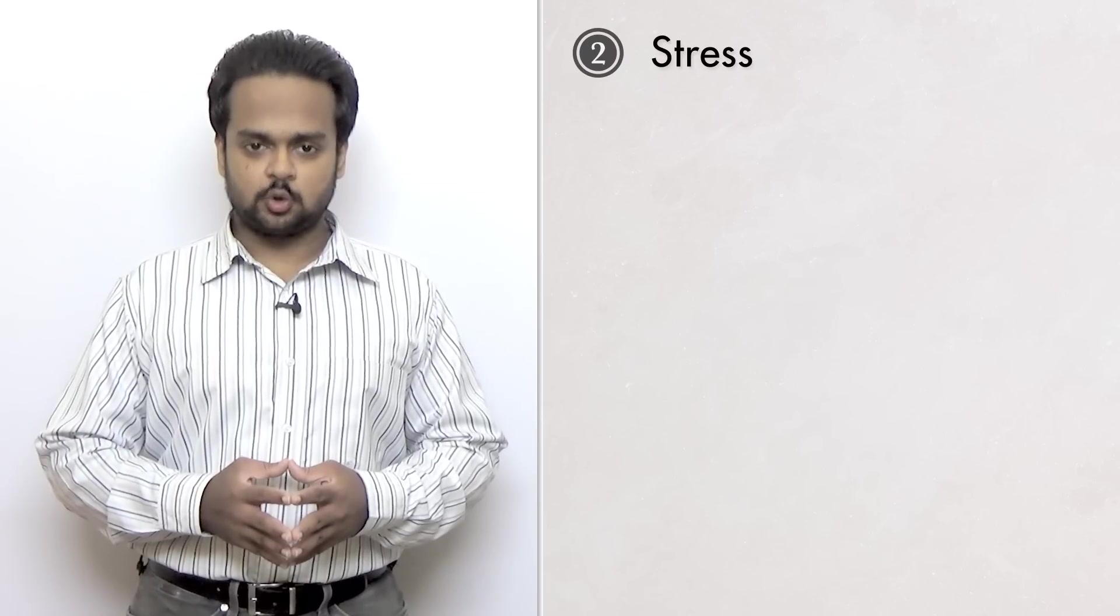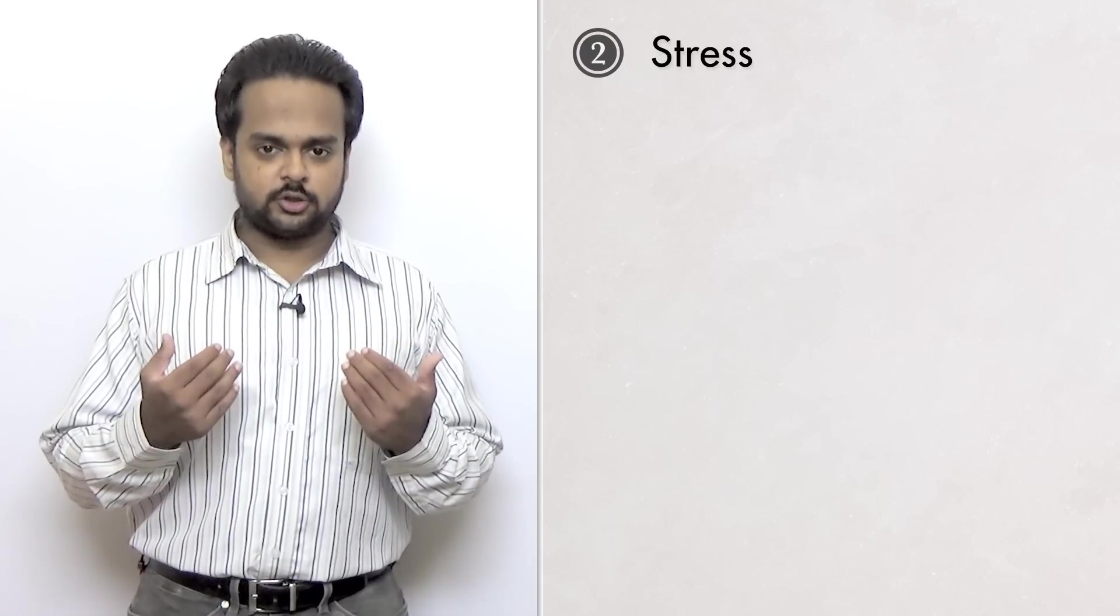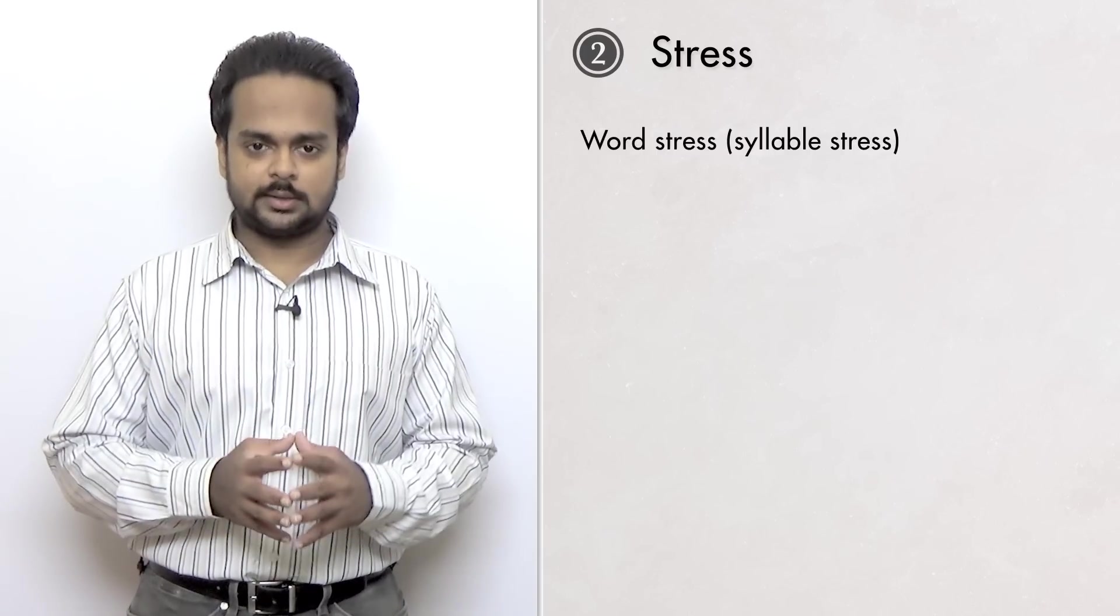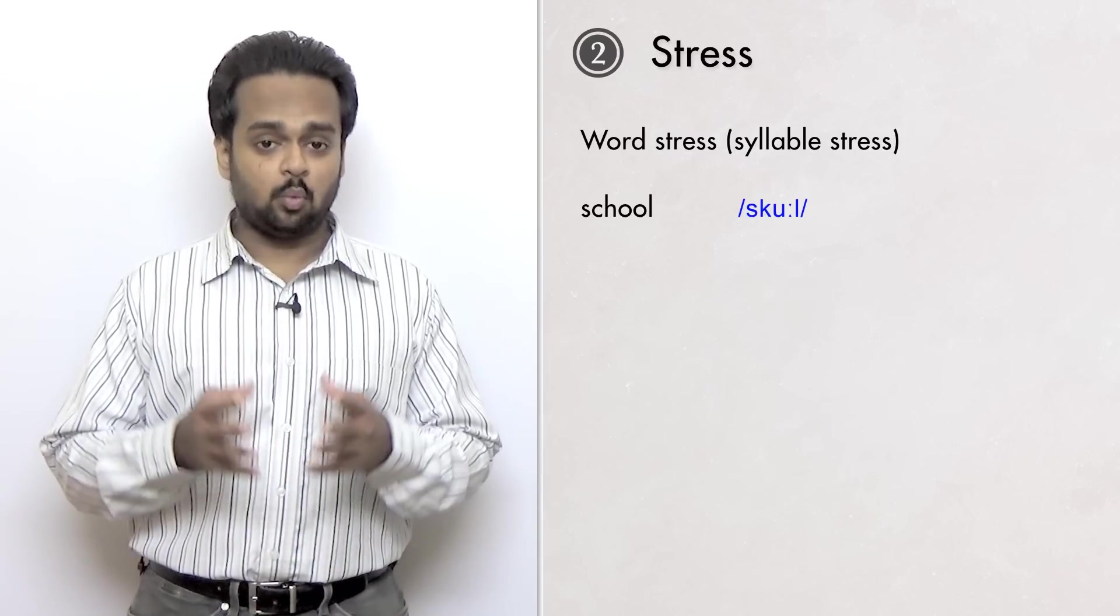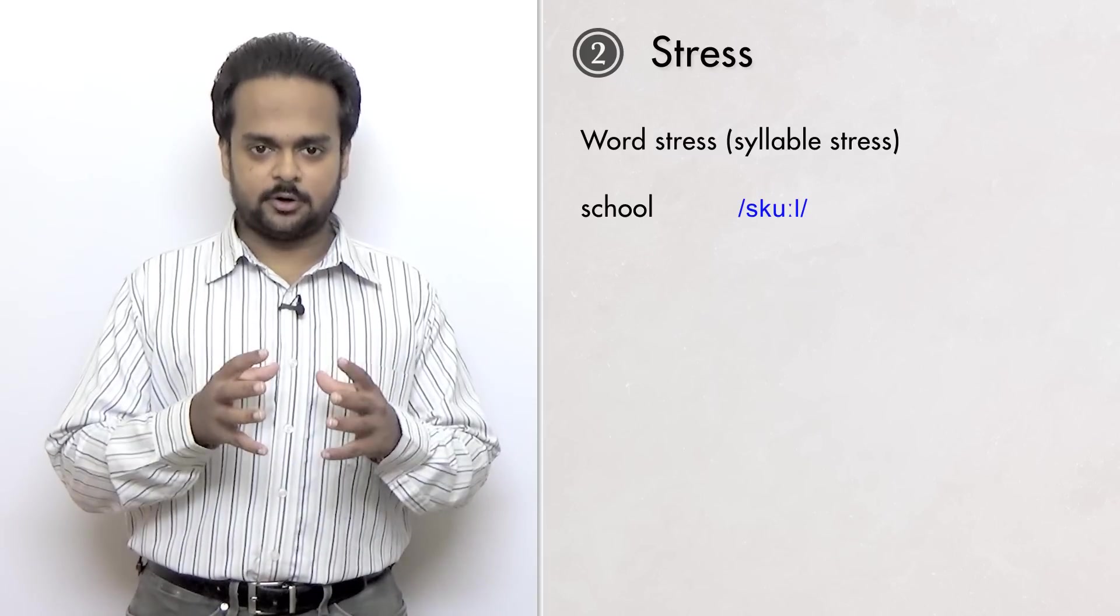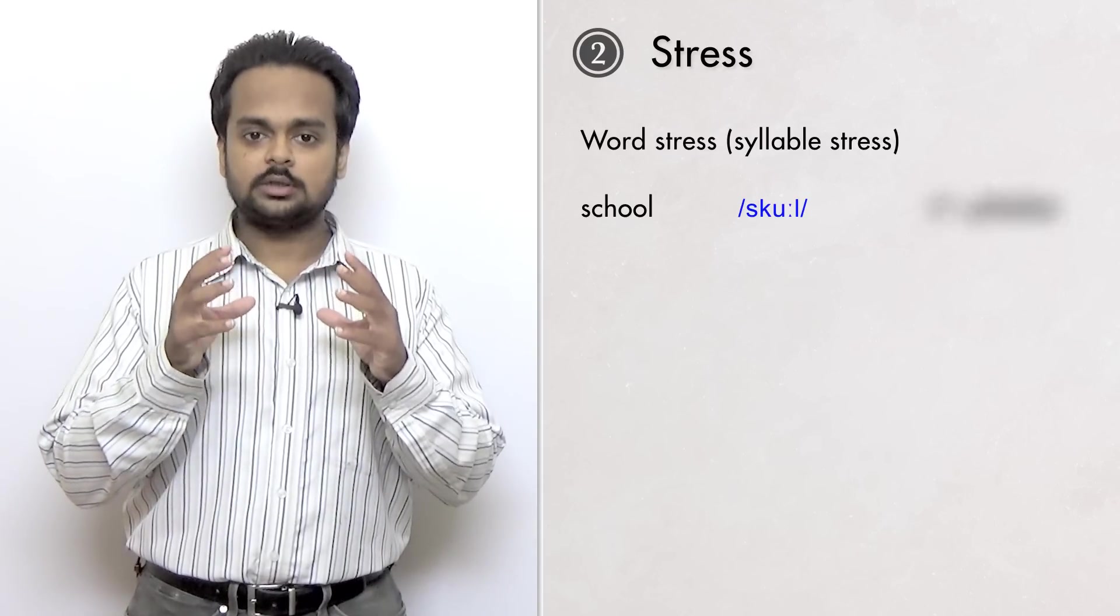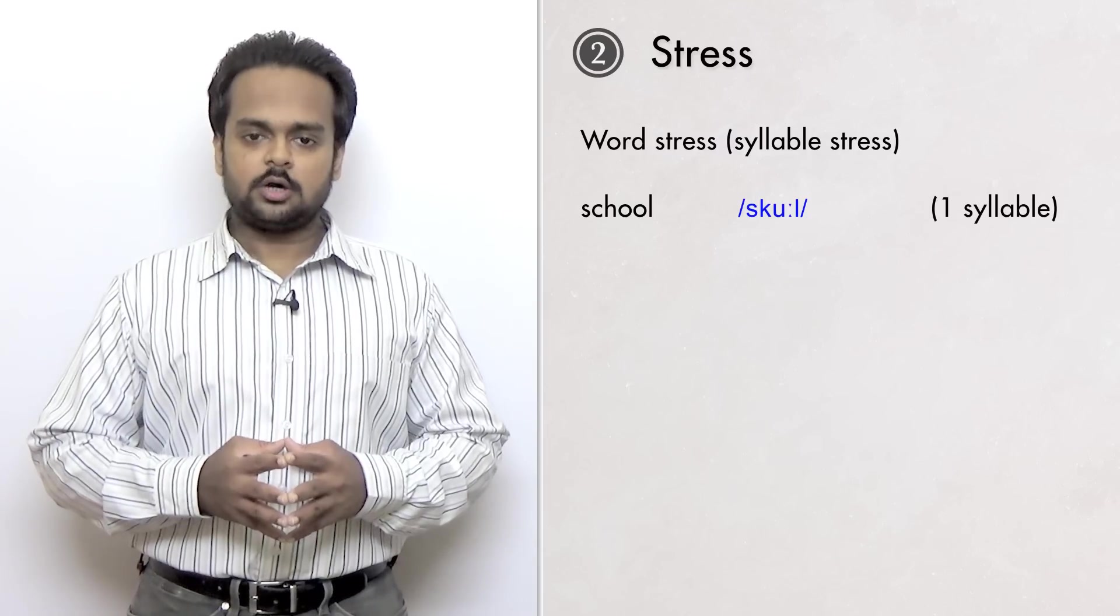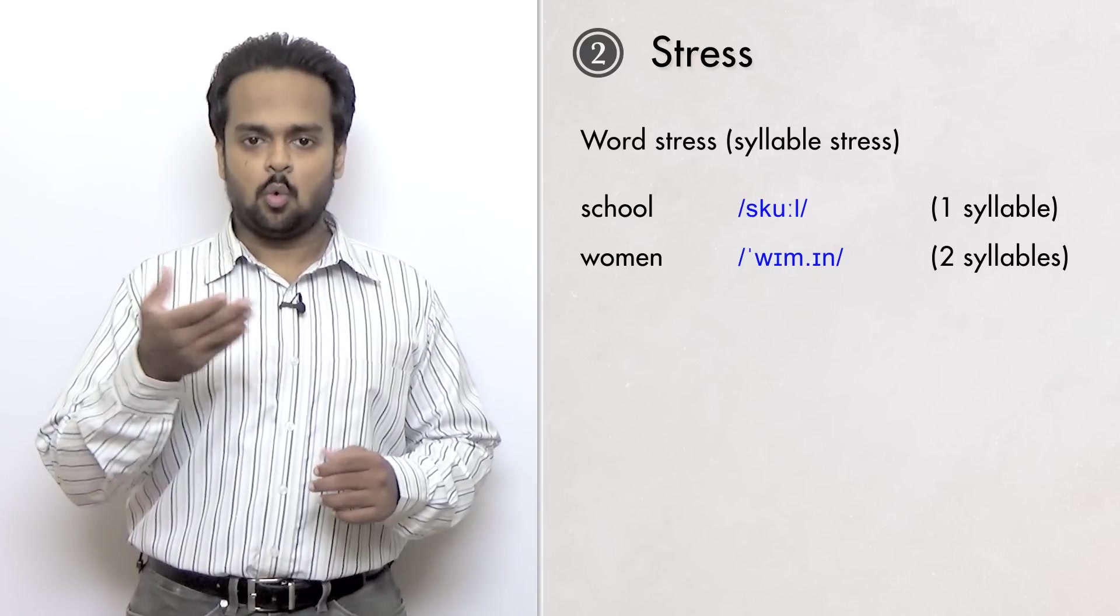Secret number two is stress. What does it mean to stress something? Well, it means to give it emphasis or importance. When we do this in pronunciation, it's called word stress or syllable stress. Take the word school. You know that there are four sounds, but we don't say school. We say all the sounds together as one group – school. This grouping of sounds is called a syllable. In the word women, there are two syllables because there are two groups of sounds – wim and im.